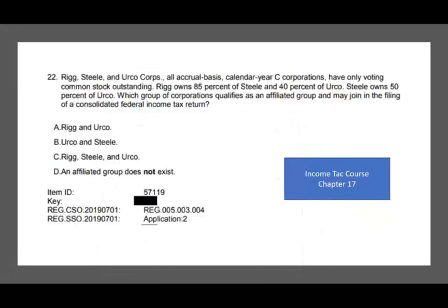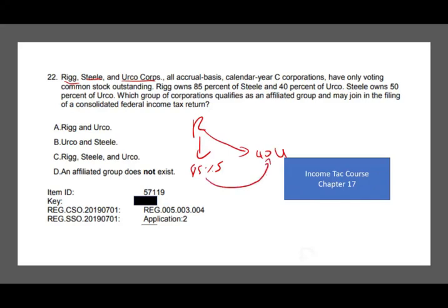Let's take a look at this question. It also deals with consolidation. Rig, Steel, and Urko - all accrual basis calendar year C corporations - have only voting common stock outstanding. Rig owns 85% of Steel and 40% of Urko. Steel owns 50% of Urko. Which group of corporations qualifies as an affiliated group and may join in the filing of the tax return? Obviously, Rig owns 85% of Steel. That's good enough. But since Steel owns 50% of Urko and Rig owns 40% of Urko, they own 90% of Urko, so it's also part of the group. Therefore, all of them are included in this affiliated group. The answer is C.